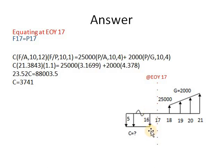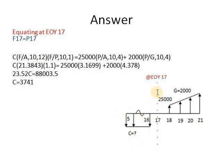You can equate at year 16 and push the equivalence amount of this arithmetic gradient, located at year 17, back one period. Or you can push the future of this annuity forward one period and equate at year 17. You are free to use either approach on the cash flow timeline.